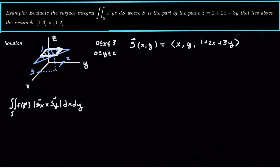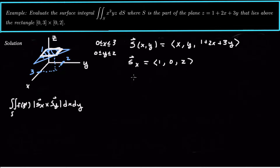So we need this magnitude — this Jacobian or normal vector magnitude. sx is going to be the vector (1, 0, 2), and sy is going to be the vector (0, 1, 3).